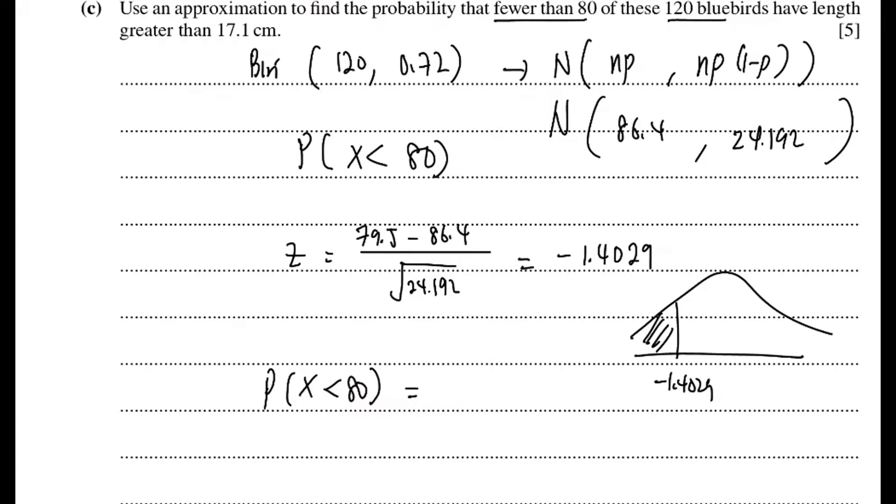So we get negative 1.4029. So we're looking for the area here, this side. If I look at my table, at here I get 0.9196. So therefore your answer for here will be 1 minus 0.9196. So my answer will be 0.0803 or you can write 0.0804, either one.